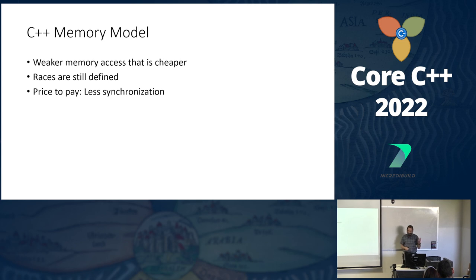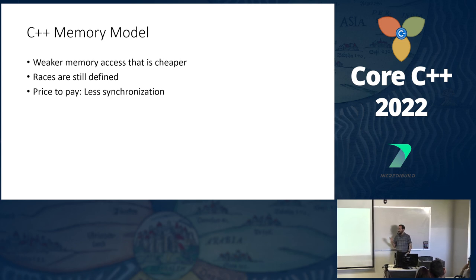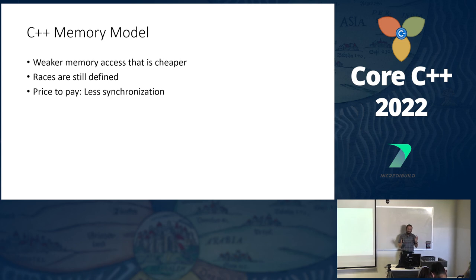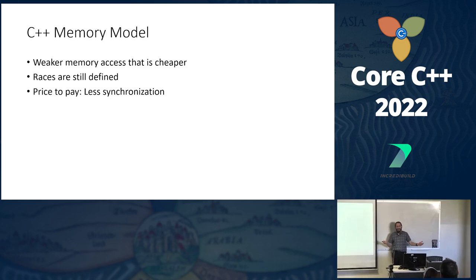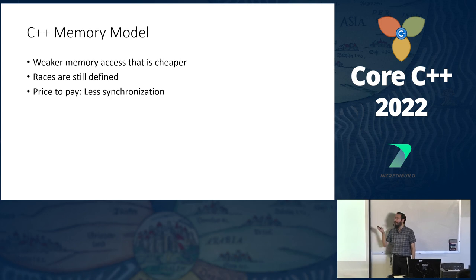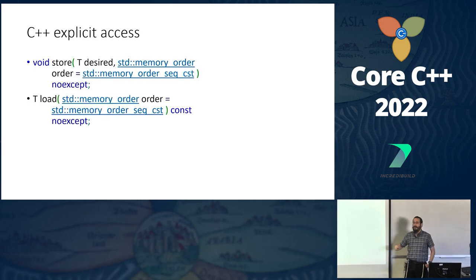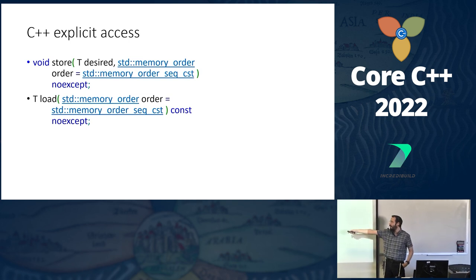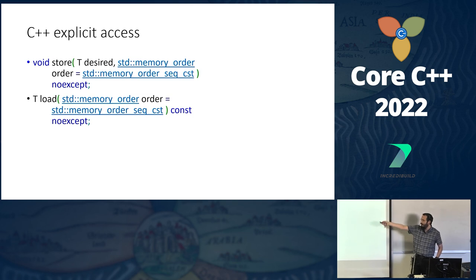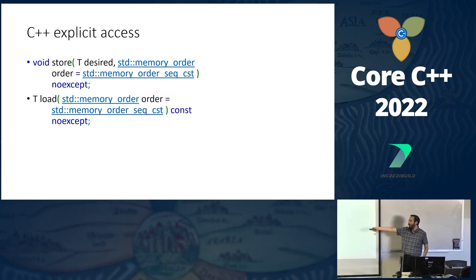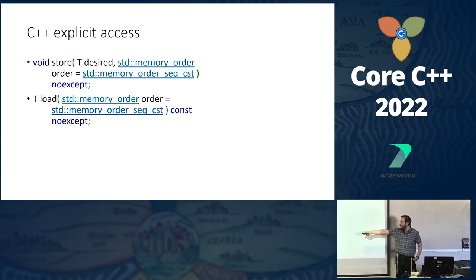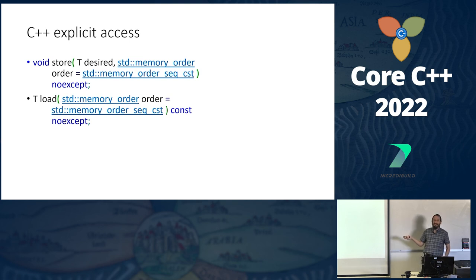This is where the C++ memory model comes to the rescue — it provides weaker accesses that are cheaper. Races are still defined, but we can still reason somewhat about correctness. The price is synchronization. For weaker accesses, we require explicit load and store member functions, where you specify the type of memory access — the default was sequential consistency. This explicit syntax makes it harder and more annoying to use, since it's more error-prone.